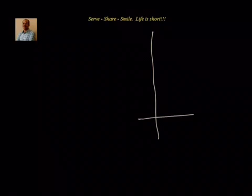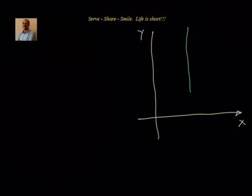Let us take the coordinate axis. This is our coordinate axis — we have x and y. Now, the coordinate axes are shifted to another point. First, to translate it. We will say this is our new coordinate axis, and this is x dash and y dash.